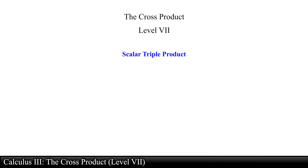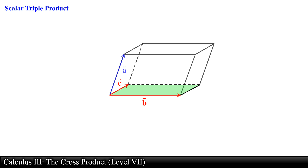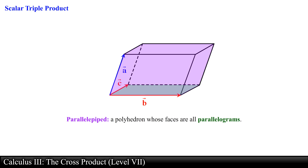The cross product, level 7. In this video we will go over our first application of the cross product. In the previous video we used the cross product to find the area of a parallelogram formed by two adjacent vectors. We can extend this idea to three dimensional space and use the cross product to determine the volume of a parallelepiped, a polyhedron whose faces are all parallelograms.